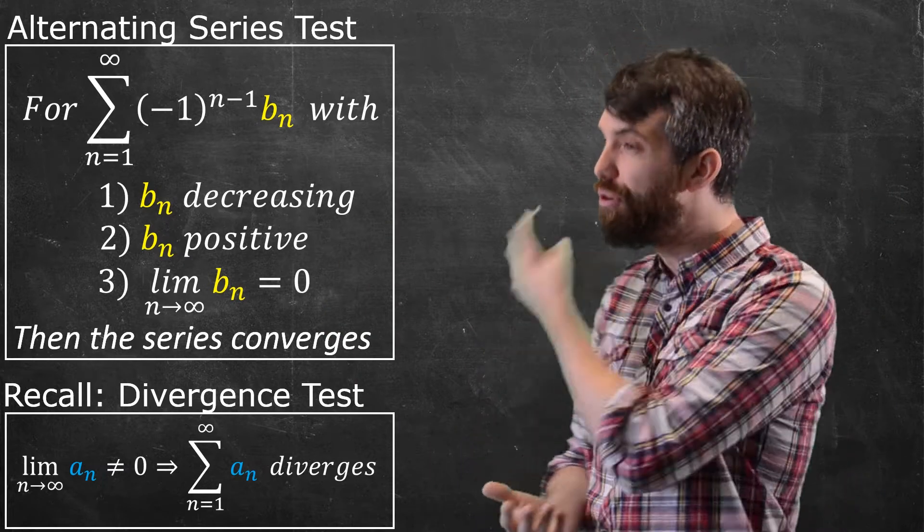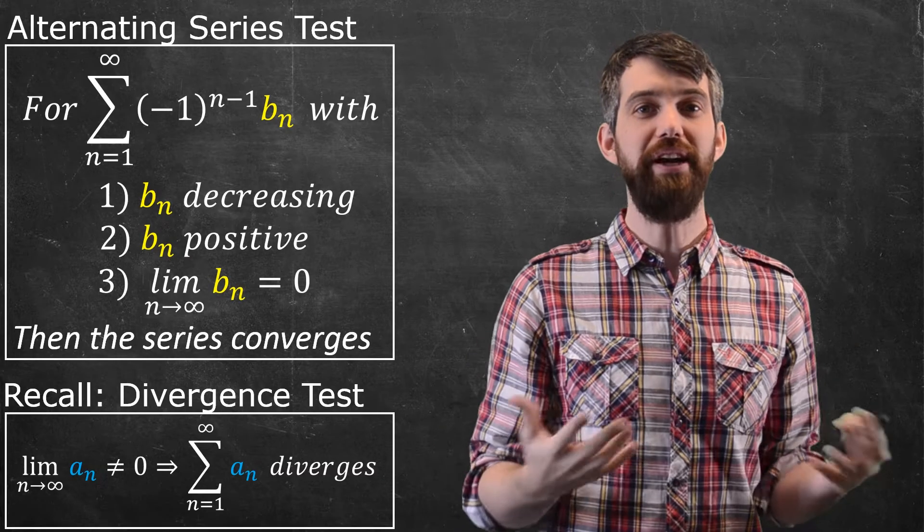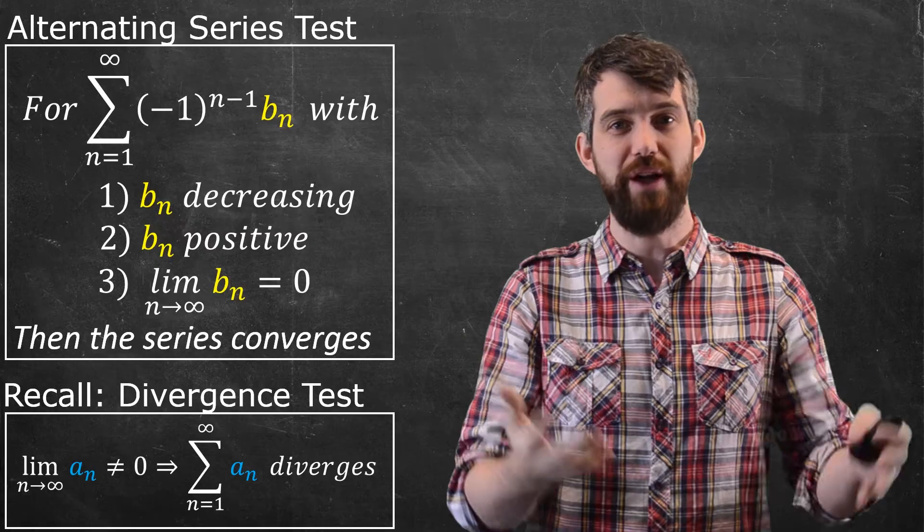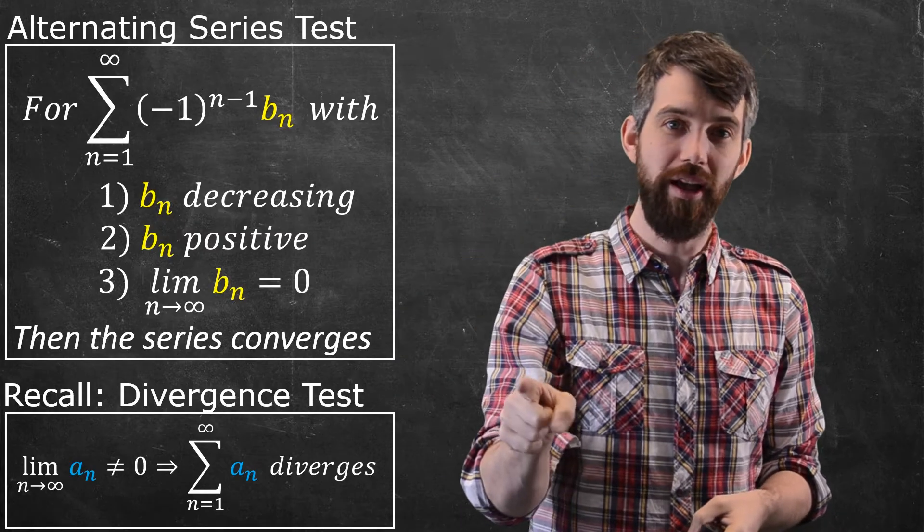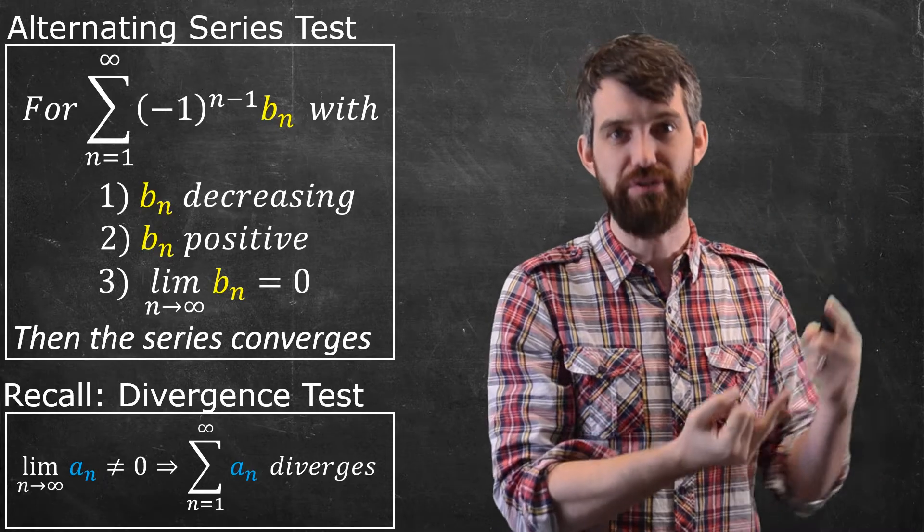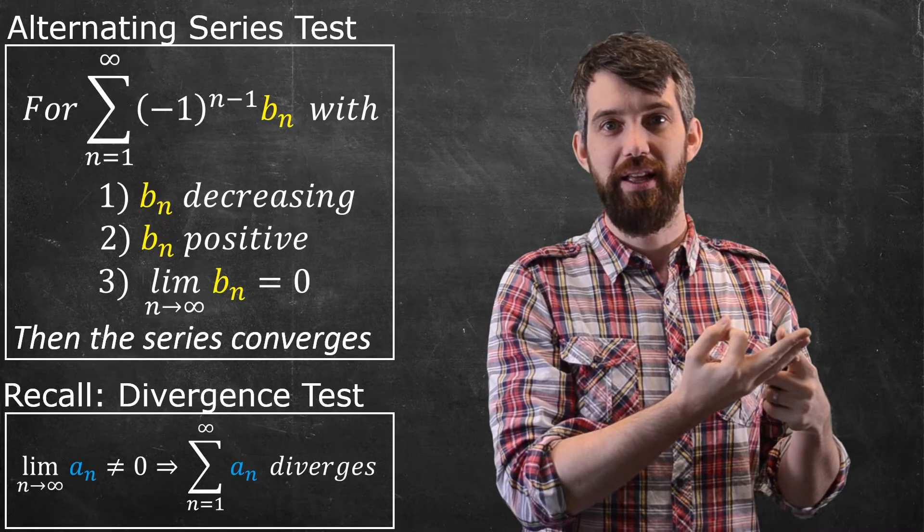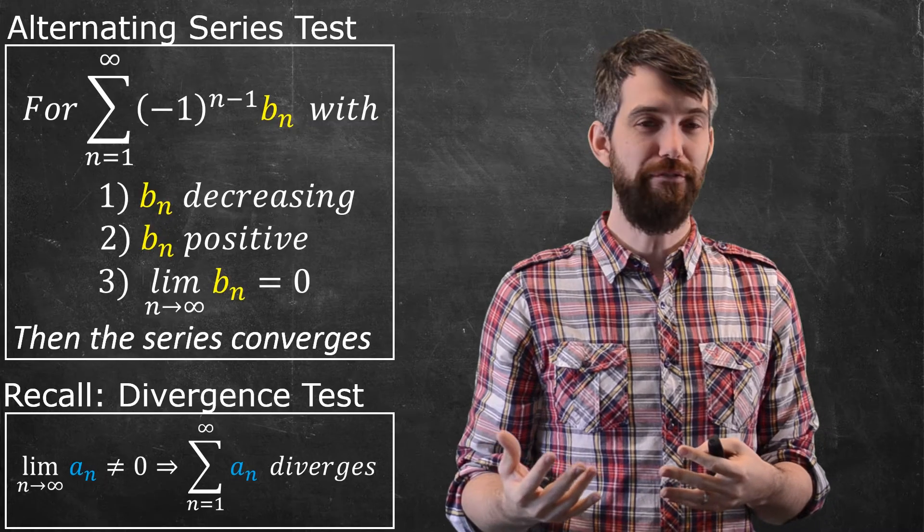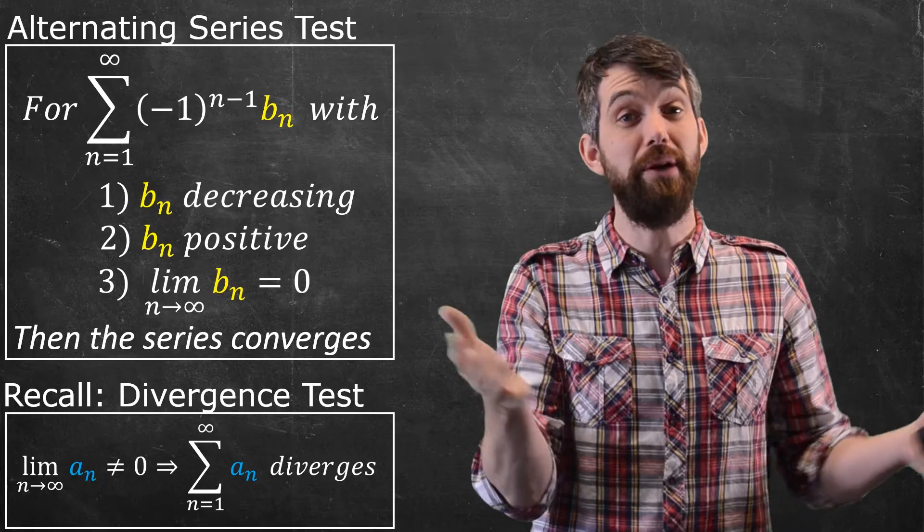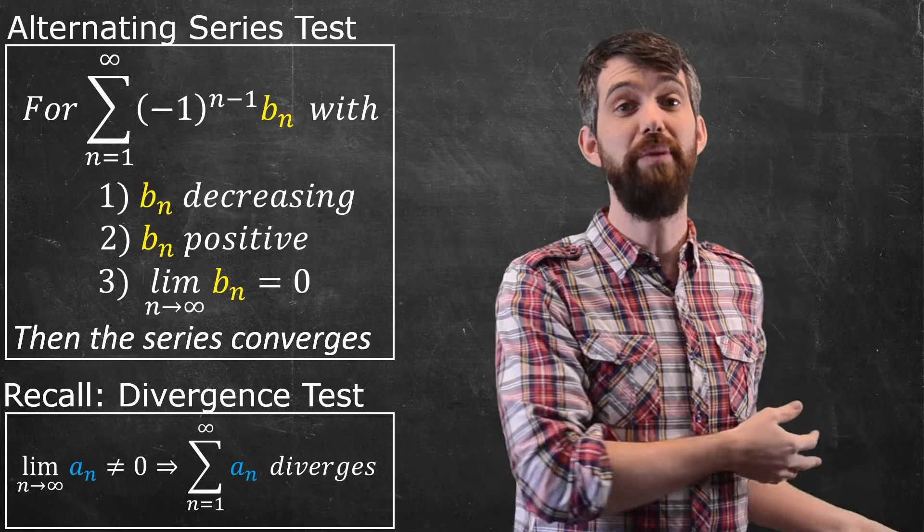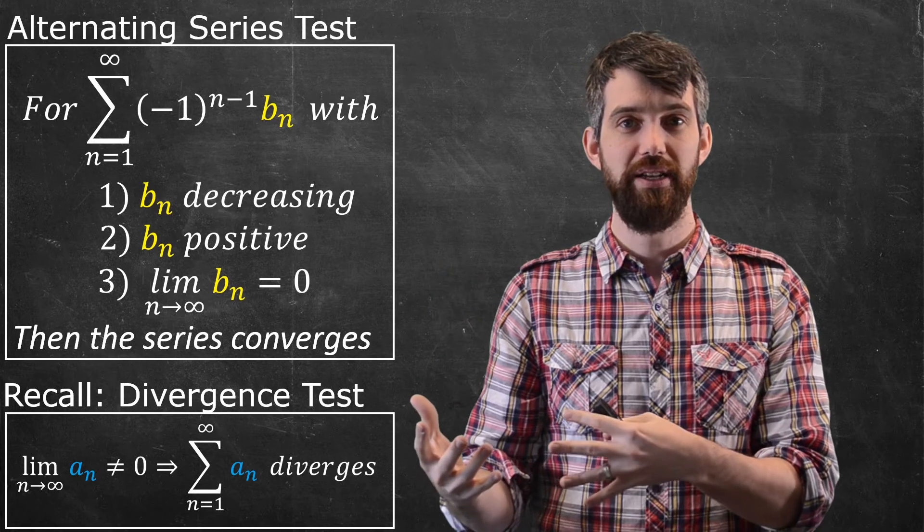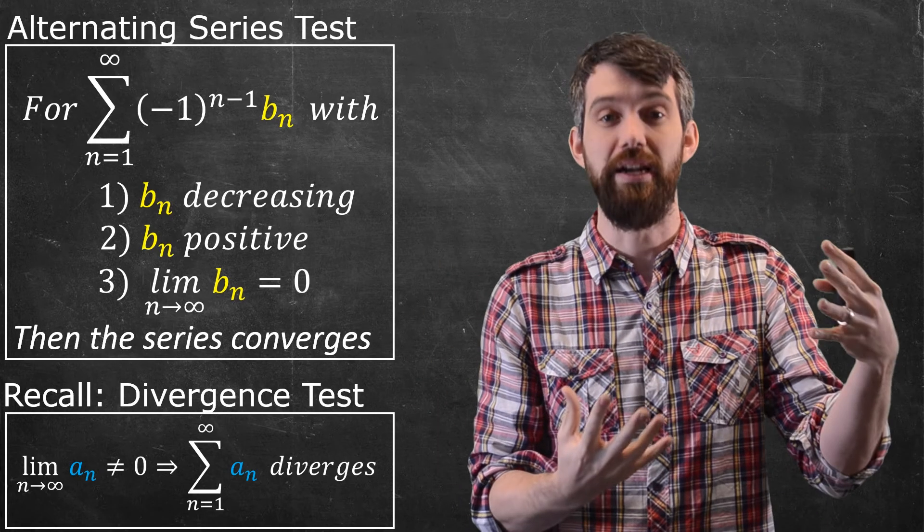The alternating series test partially goes the other direction of the divergence test. It says if lim b_n = 0 and you have alternating terms, positive terms, and decreasing terms, then you get convergence. If lim b_n = 0 but you don't have those other conditions, there's no guarantee of convergence. If the limit is non-zero, the divergence test guarantees divergence. These two tests are related in that sense.